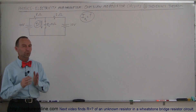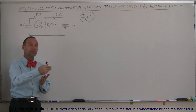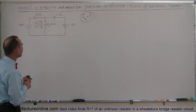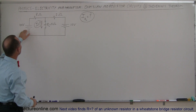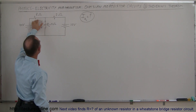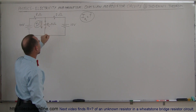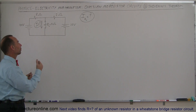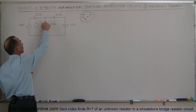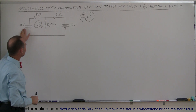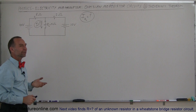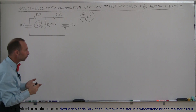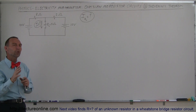We're going to take a look at Thevenin's Theorem, a really handy theorem that will help us solve some additional problems in future videos. We have a circuit with two batteries — 40 volts and 10 volts — two resistors of 8 ohms and 2 ohms, and a load resistor in the connection branch. Usually we're interested in finding how much current goes through the load resistor. Because of the two batteries, this is not a simple problem. We could solve it using Kirchhoff's rules with three equations, but Thevenin thought of a simpler way.